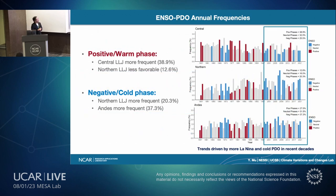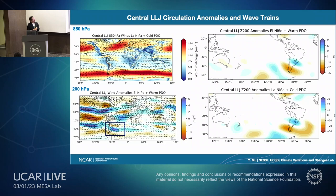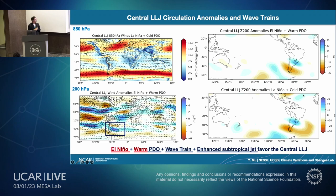Looking at ENSO-PDO annual frequencies classified by positive and negative phases: the central jet is more frequent during warm phases, while northern and Andes jets are more frequent during cold phases. This is driven by recent decades having more La Niña and cold PDO years. For central jet circulation anomalies, we look at 850 mb and 200 mb wind anomalies and Rossby wave train geopotential anomalies. We conclude that El Niño plus warm PDO, combined with wavetrain forcing and an enhanced subtropical jet, favor the central low-level jet during positive phases.